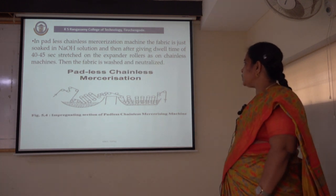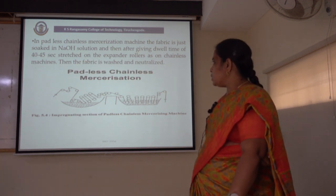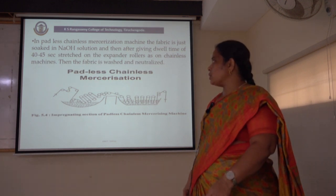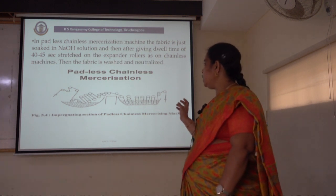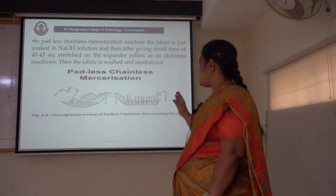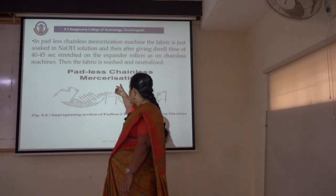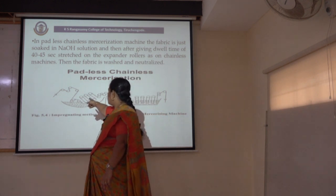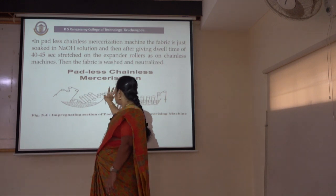Next is the padless chainless mercerization machine. In padless chainless mercerization, no padding mangle is used for the treatment process. The fabric is simply soaked in the alkali solution, and after giving a dwell time of 40 to 45 seconds, it is stretched on expander rollers as in chainless machines. Then the fabric is washed and neutralized. No padding mangle is involved for the impregnation of the cellulosic material with alkali solution — it is treated with alkali using a set of rollers only, which is why it is called the padless chainless mercerization process.